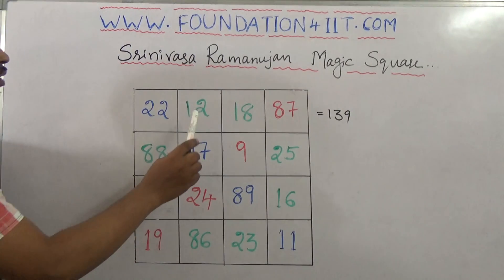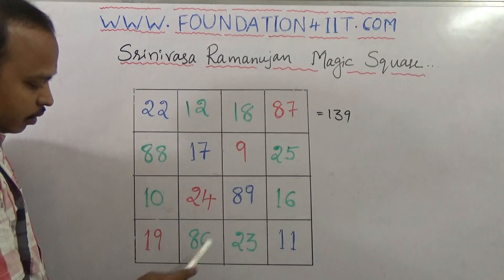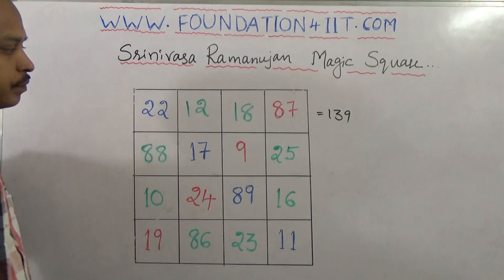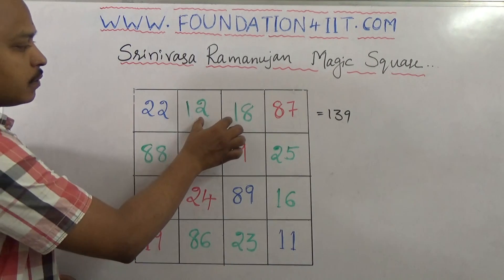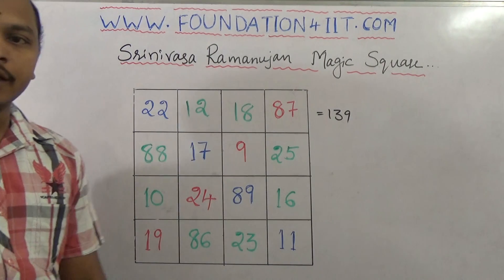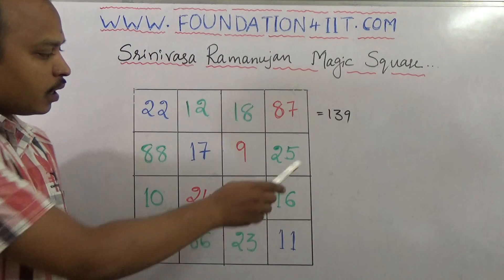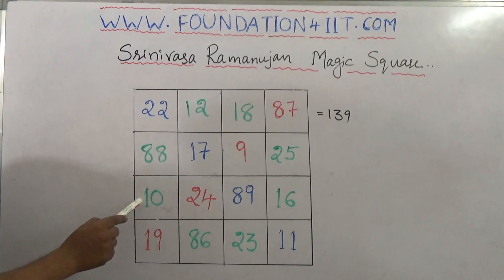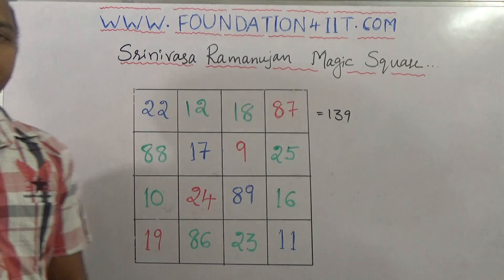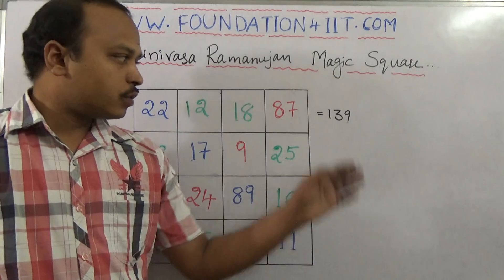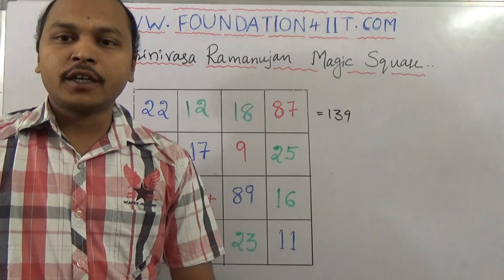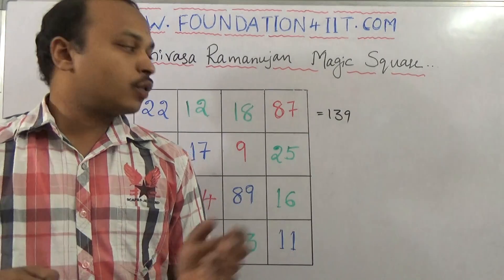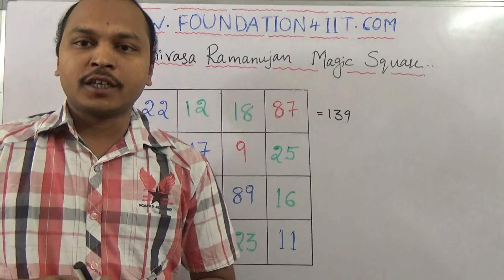Not only that — 12, 18, 86, and 23: these two and these two also sum to 139. Again, 25 plus 16 plus 88 plus 10 is also the same, 139. So many combinations are there in this to get the total sum of 139.